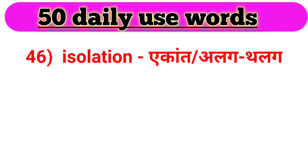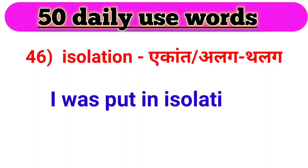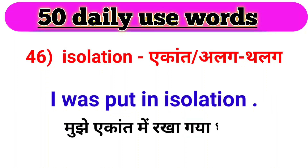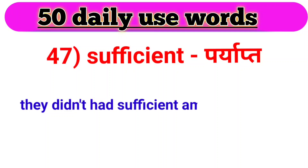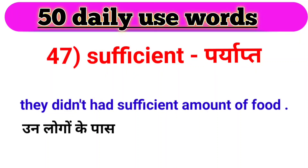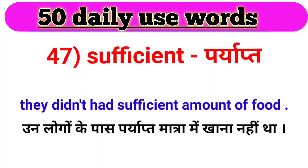Next word, we have isolation. Isolation ka matlab hota hai ekaant ya alag-thalag. For example: I was put in isolation. Mujhe ekaant mein rakha gaya tha. Next word, we have sufficient. Sufficient ka matlab hota hai paryaapt. For example: They didn't have sufficient amount of food. Unn logon ke paas paryaapt matra mein khaana nahi tha.